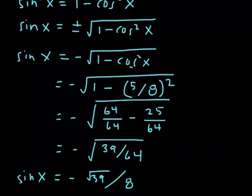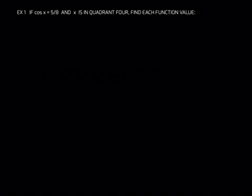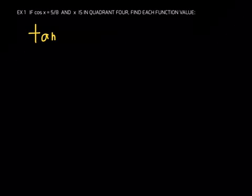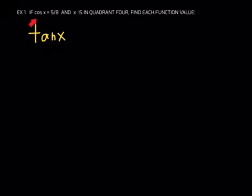Good job — that is the final answer. Now let's see what else they want us to find. The given information has not changed, but this time they want you to find tangent of x. The question is: how do I go from the given information about cosine to tangent? Which identity will connect cosine to tangent? I always want to try to use the given information if possible.